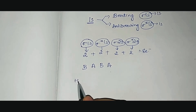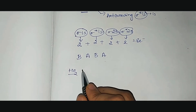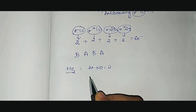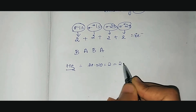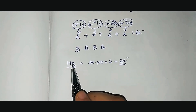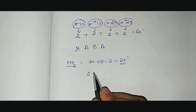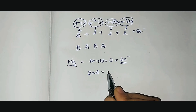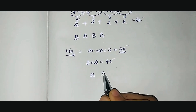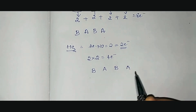Let us consider the molecule He₂, the helium molecule. The atomic number of helium is 2, so the number of electrons is also 2. Since we have 2 helium atoms, the total number of electrons is 2 × 2 = 4 electrons. We place these across the orbitals: bonding, antibonding, bonding, antibonding.